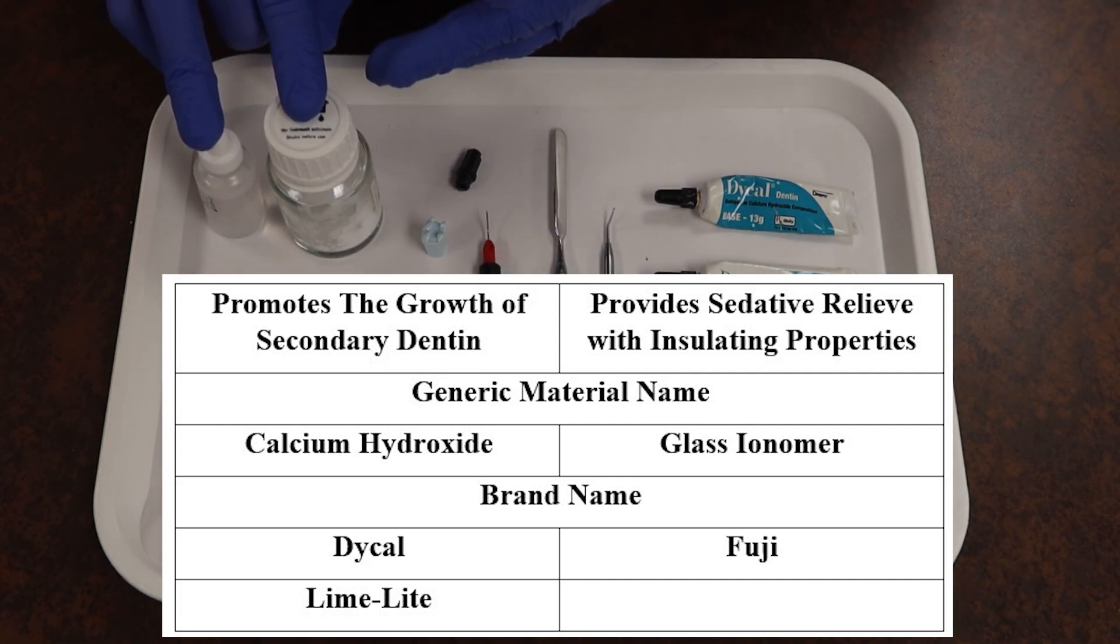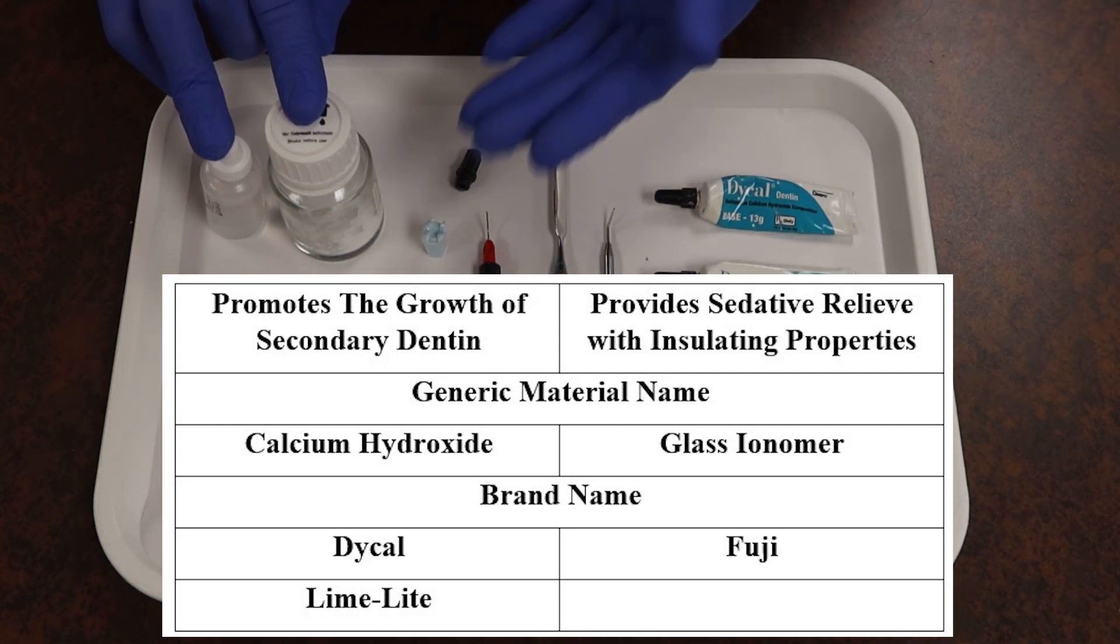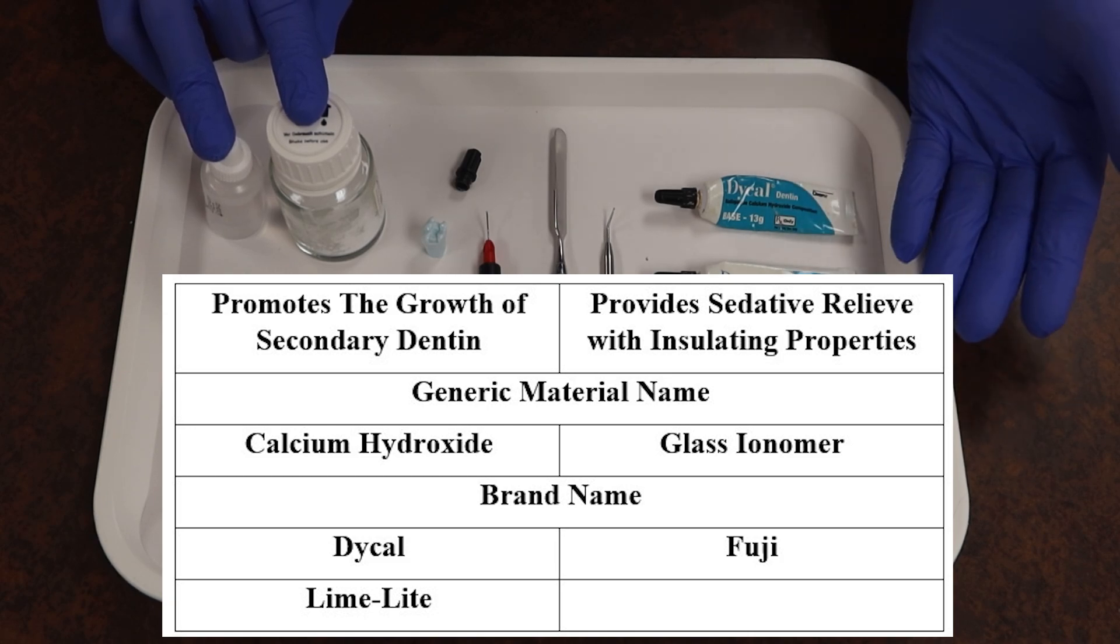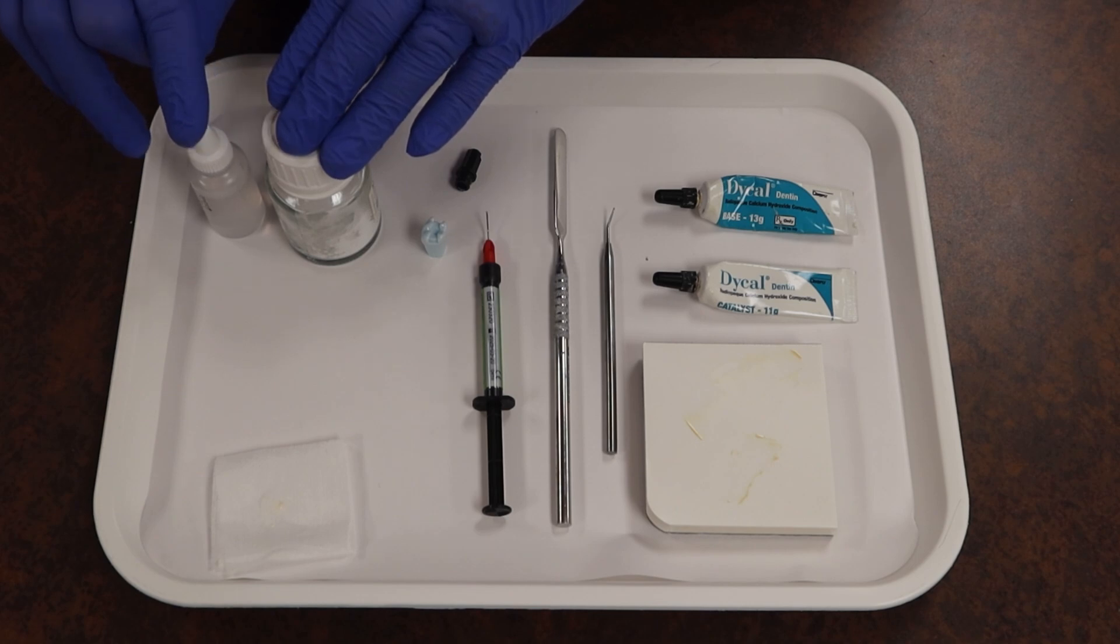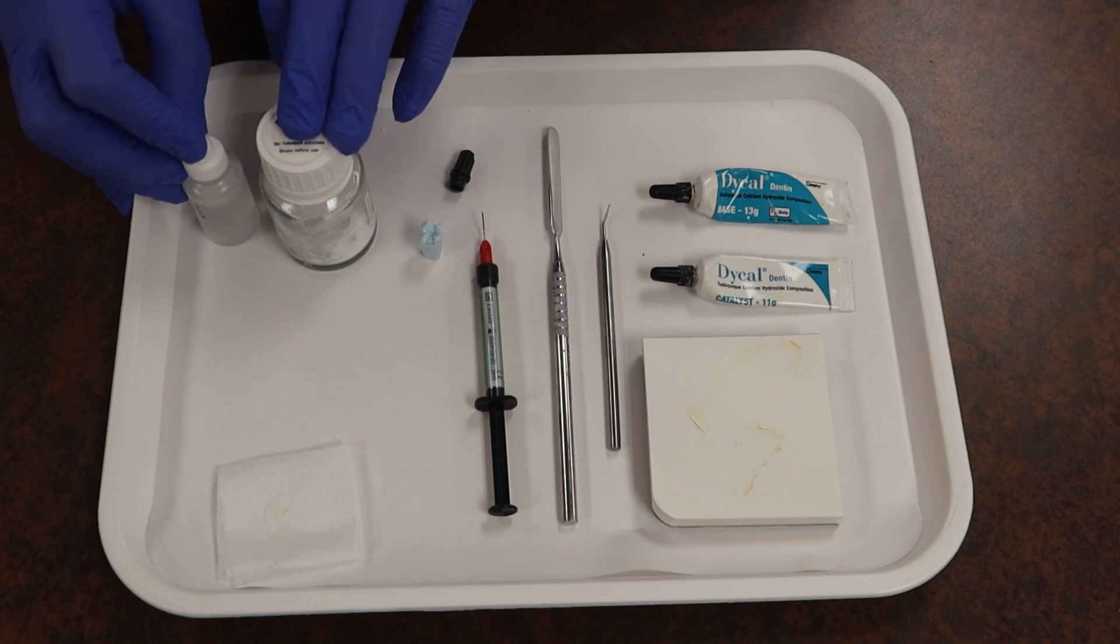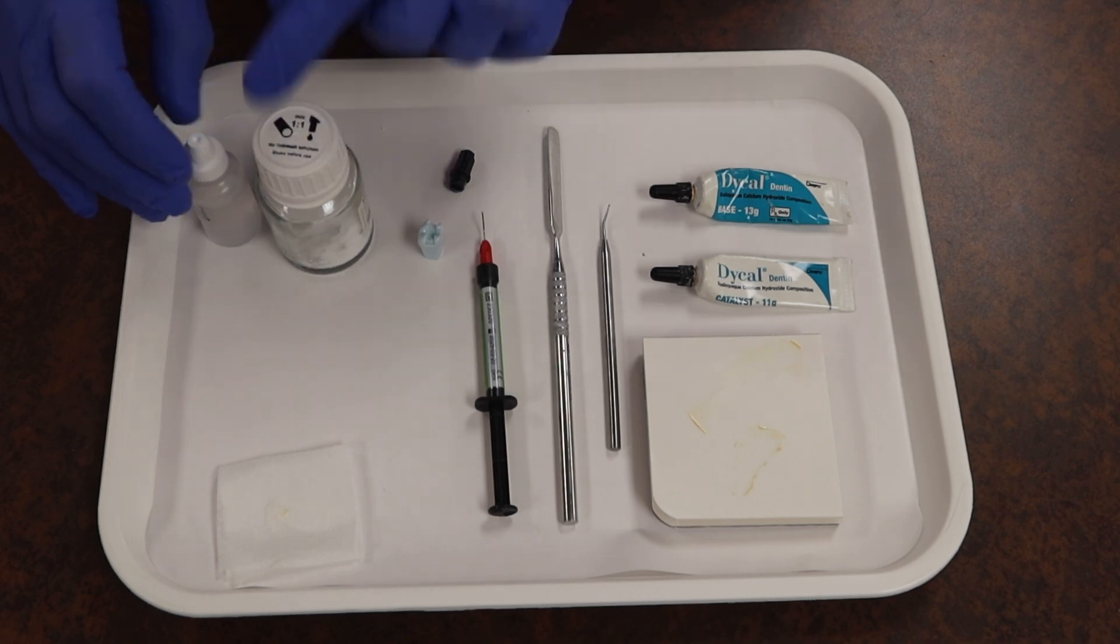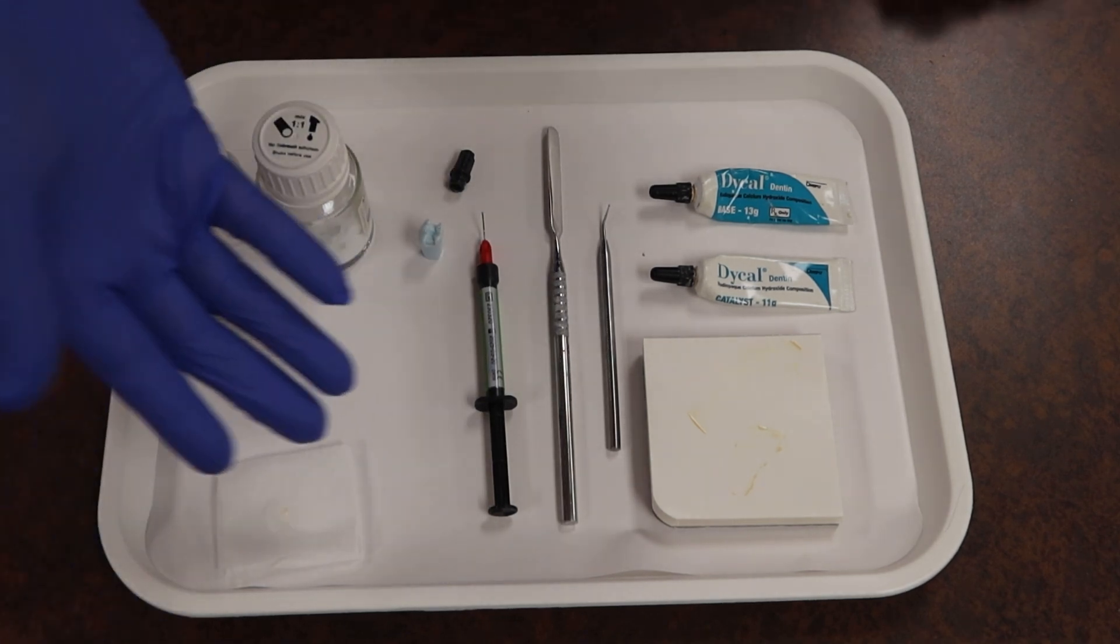But what it doesn't do, specifically, is promote the growth of secondary dentin. These different systems have their beneficial properties and times to use them. And apart from that, if you want to see more about glass ionomer and when we can use it and further mixing styles, go ahead and look for the video about bases and cements and you'll more likely see this one show up also. Apart from that, take it easy.